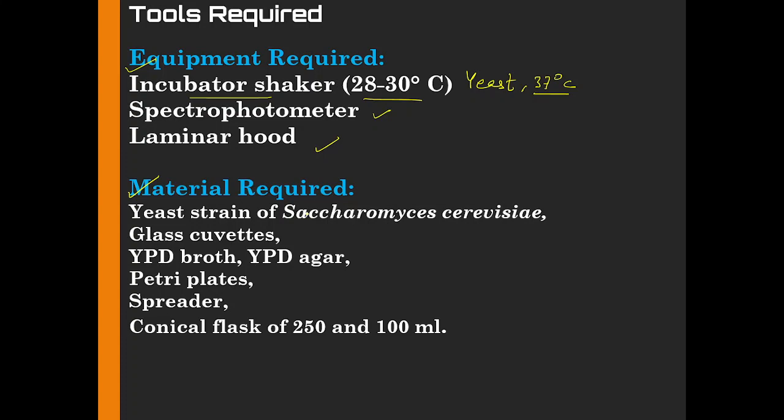Certain materials which are required include the yeast strain, that is Saccharomyces cerevisiae, which is also called budding yeast. Then glass cuvettes for the measurements of optical density. The media, that is YPD broth and YPD agar. Then petri plates, spreaders, conical flasks. These are some of the basic equipment which is required.